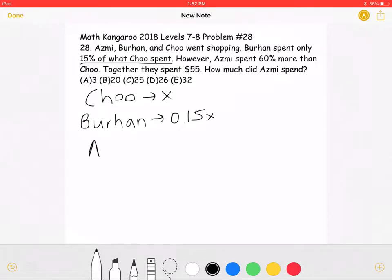That means that Asmi must have spent a total of 1.6X because she spent 60% more than Cho.